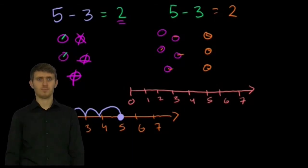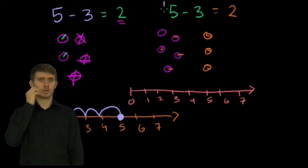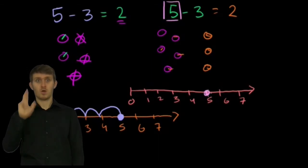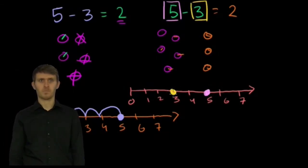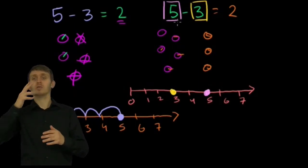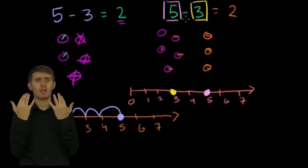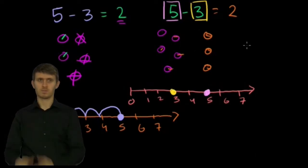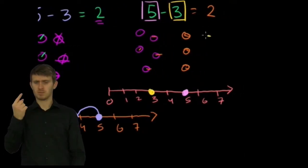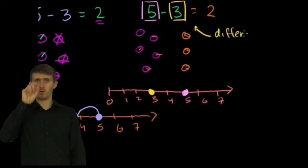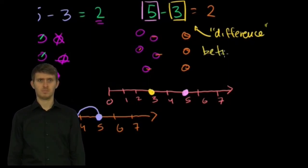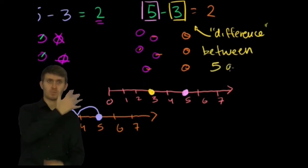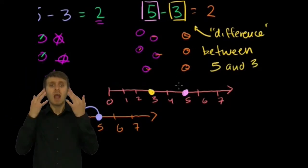So if I were to plot where 5 is on this number line, so this is the 5 right there. I'll put a little pink square around it. 5 is right there. Now 3, let me do 3 in this yellow color. 3 is right here on the number line. So in this way of thinking about 5 minus 3, you're saying, what is the difference? Let me write that down. Here we're saying, what is the difference between 5 and 3?